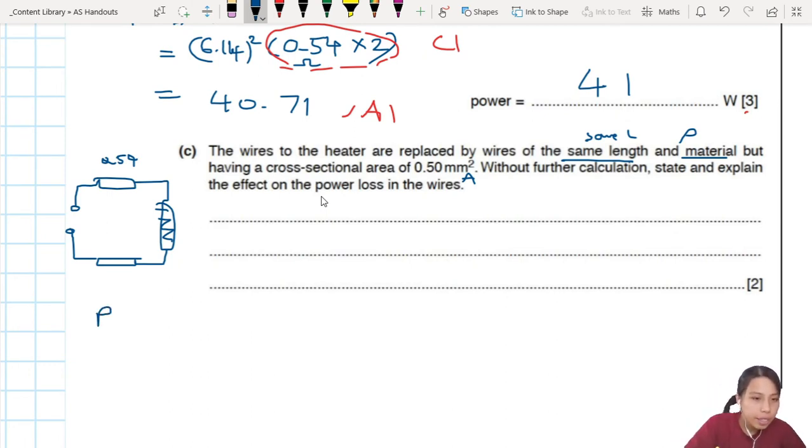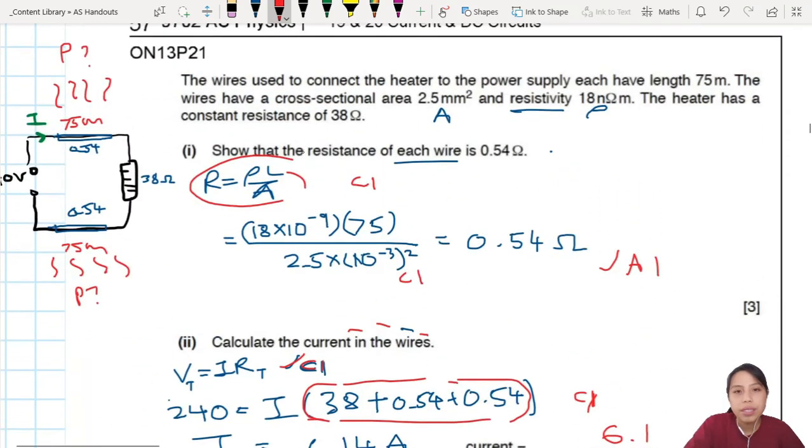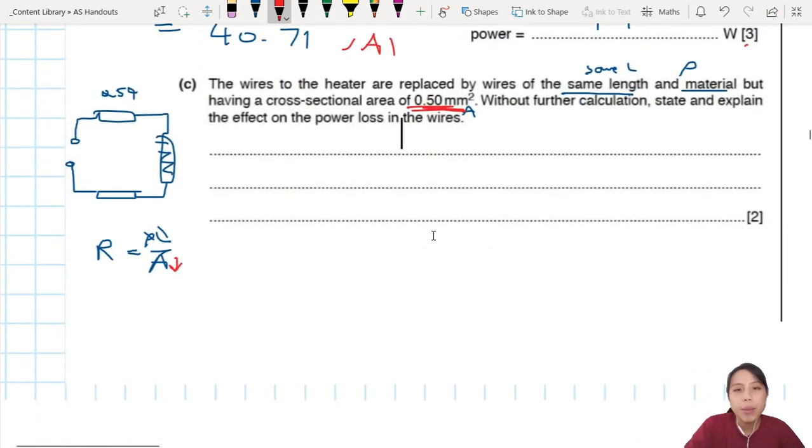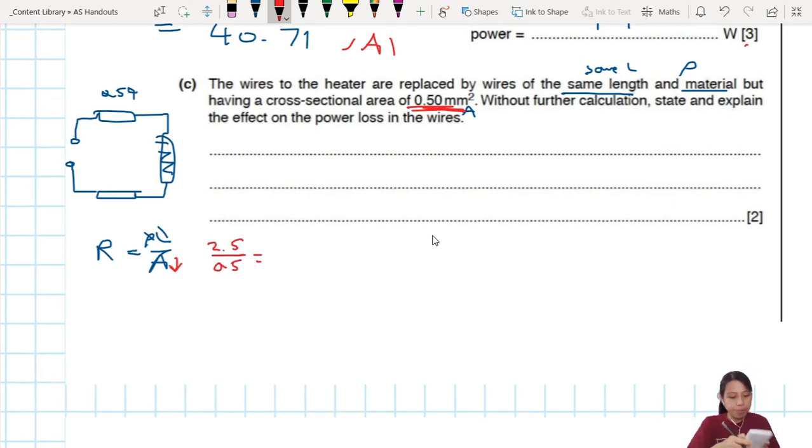So what you could do is, as a first step, figure out how does R change? R here depends on rho L over A. What's different? Same L, same rho. A is changing. Okay. So here, when your R area, is it decreased or increased? Previously, it's 2.5. So it dropped. Dropped by how many times? Before this was 2.5 mm. Drop until 0.5. How many times is that? 2.5 over 0.5 is, what's the ratio? Five times. So it means your A is decreasing by five times. That means your resistance should increase, because it is inversely proportional relationship. So this one should increase by five times. Let's write that as our first sentence.